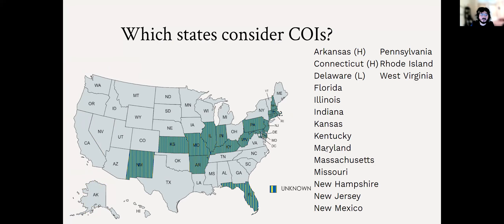Now we get to more of the unknown territory. These states are relatively ambiguous on whether or not they will consider a community of interest. These could be because they're still currently in the redistricting process. For example, Connecticut, Delaware, and Florida did not have additional criteria in 2011, so they're unlikely to have it this round, but it's not definitely confirmed.